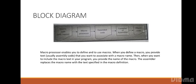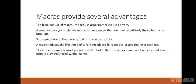This is the block diagram of a macro instruction. The macro processor enables you to define and use macros. When you define a macro, you provide text that you want to associate with a macro name. Then, when you want to include the macro text in your program, you provide the name of the macro. The assembler replaces the macro name with the text specified in the macro definition.